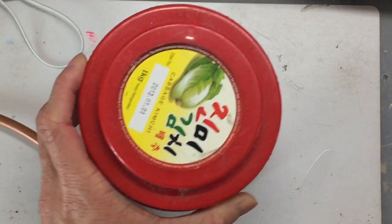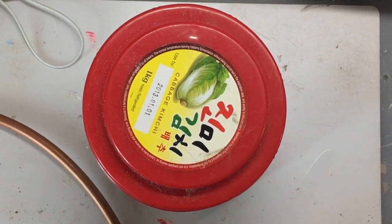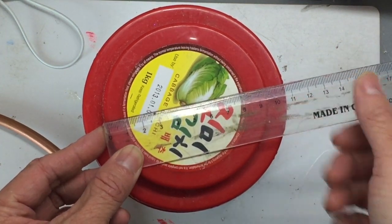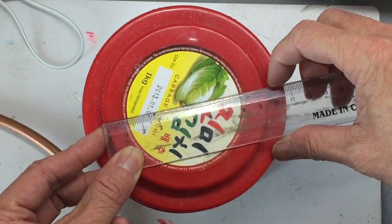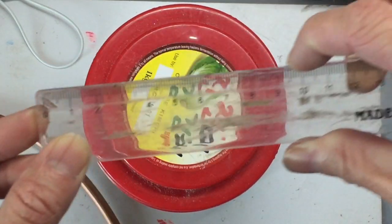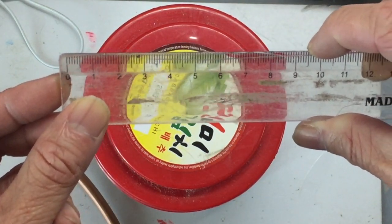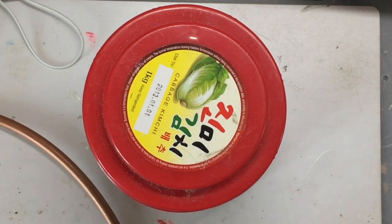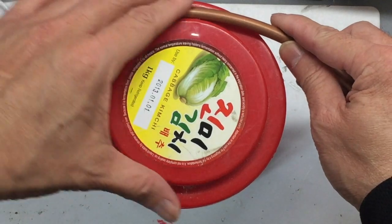First you need to find this type of copper pipe. This is an 8mm wide copper pipe. Then you find a mold, a can that is around 100mm or 10cm wide, so you can use it as a mold to bend the copper pipe into a circle.